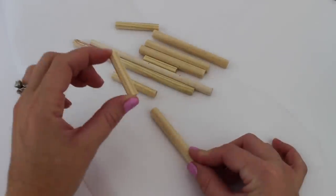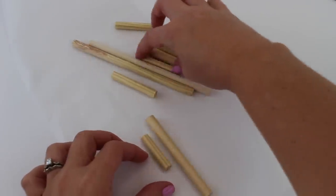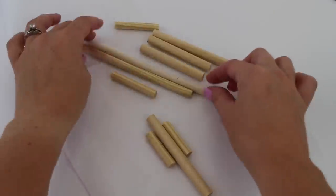The bottom piece is 4 inches, so this dowel is 4 inches. And then the two side pieces are an inch and a half.